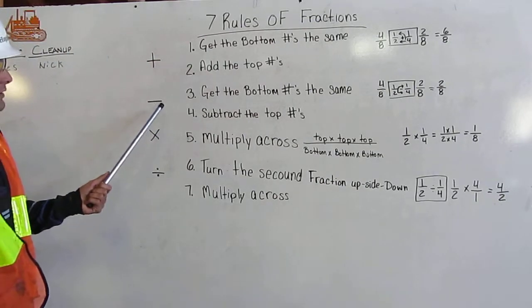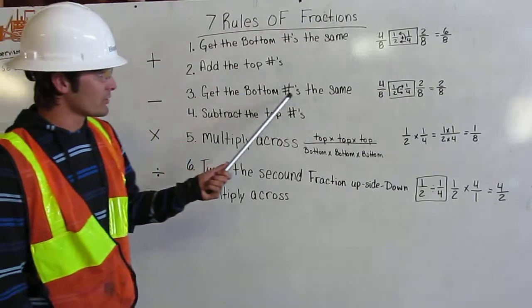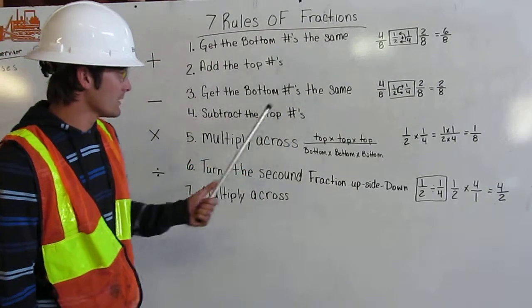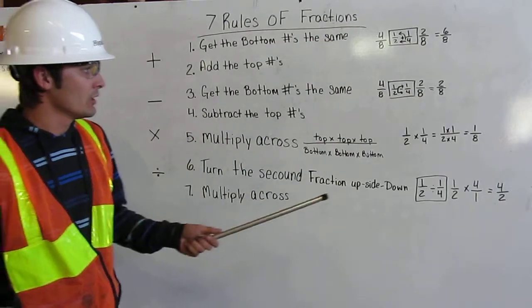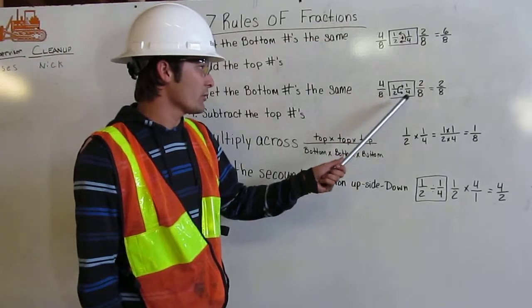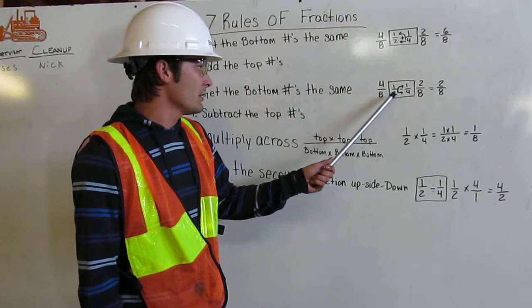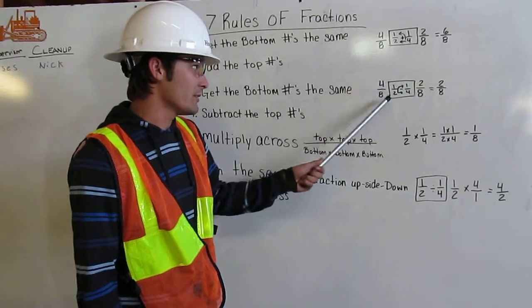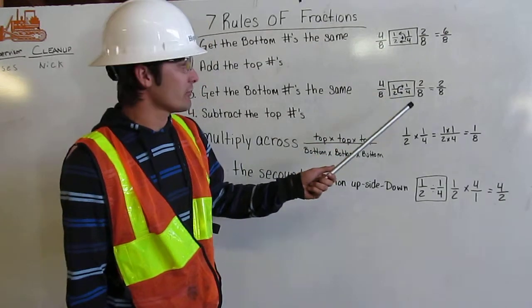Next I'm going to subtract fractions. I'm going to get the bottom numbers the same, and then I'm going to subtract the top two numbers. Over here I have one-half minus one-quarter. I drew my box around here to show that I'm going to change the fraction.